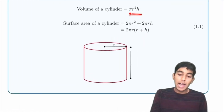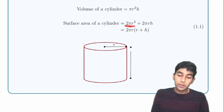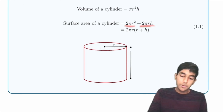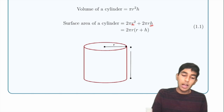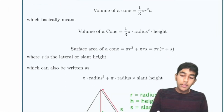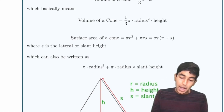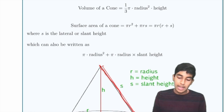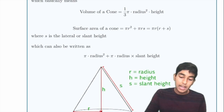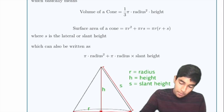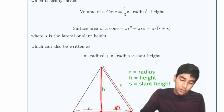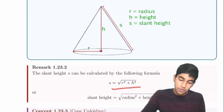For a cylinder, volume = πr²h and surface area = 2πr² + 2πrh. For a cone, volume = (1/3)πr²h and surface area = πr² + πrs, where s is the slant height. You can find the slant height using the Pythagorean theorem with r and h.